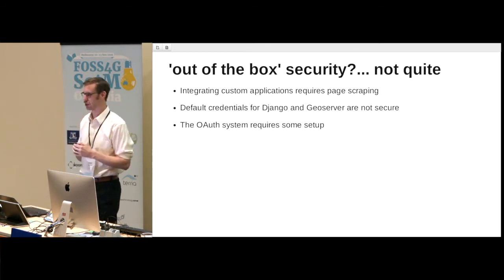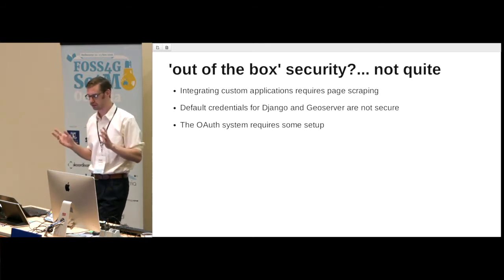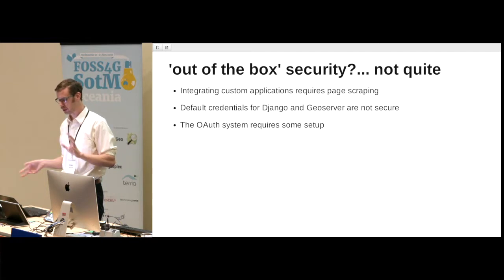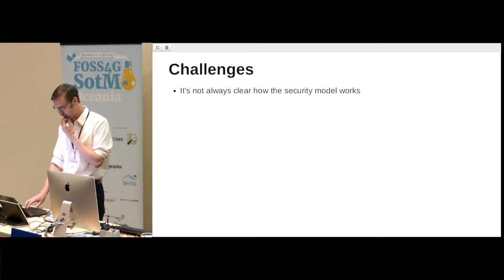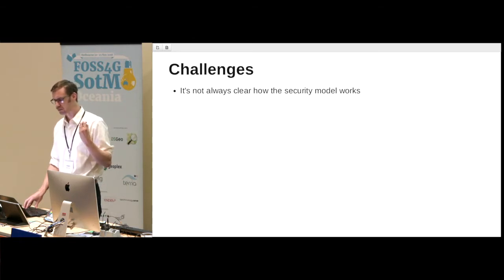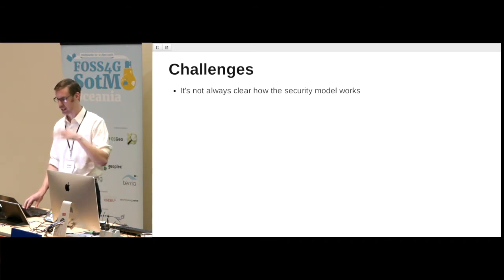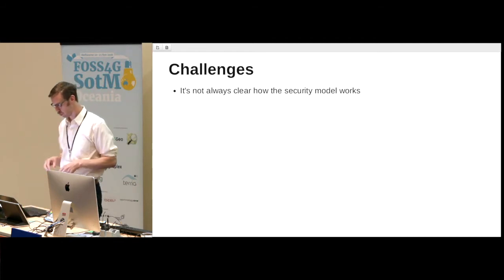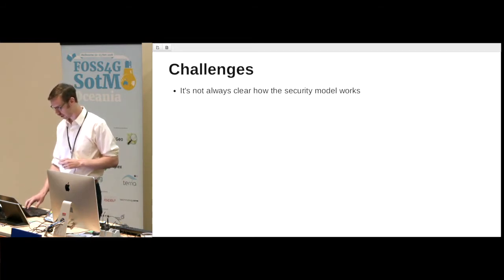The OAuth system requires some setup — there's a bit of box-ticking involved. And it's not always clear how the security model works. There is quite a lot of documentation in GeoNode about it, but when you get down to figuring out access tokens, what's in which cookie and what you need — that's more of a trial-and-error thing.